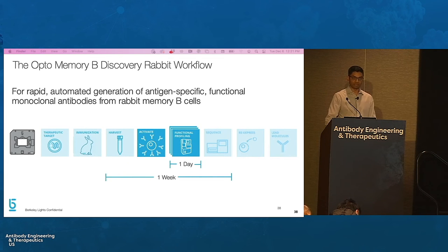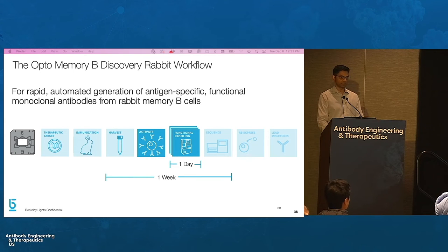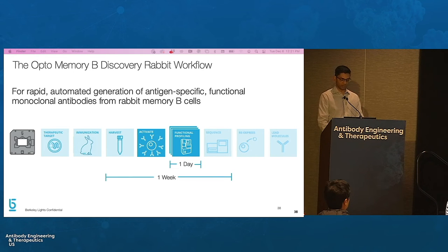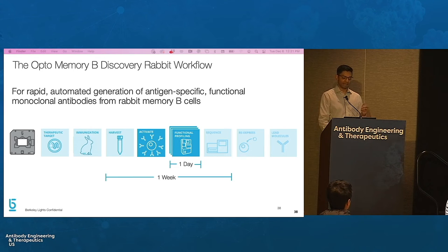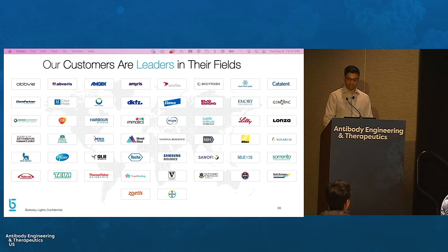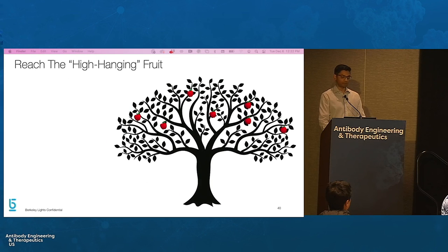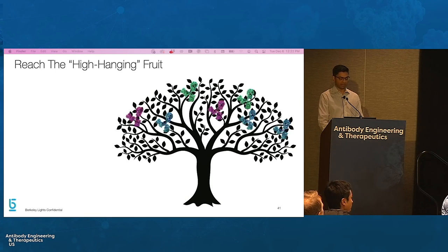In summary, BLI's new Opto-Memory B discovery rabbit workflow enables rapid discovery of functionally characterized antibodies from rabbit memory B-cells. The workflow enables robust activation of rabbit memory B-cells using feeder-free activation media, function-forward screening of activated B-cells to identify antibodies of interest, and efficient recovery of antibody sequences for downstream sequencing and re-expression — all in one week. Berkeley Lights has a large and growing list of customers using the technology for antibody discovery, cell line development, and other applications, and by enabling functional screening of broad B-cell diversity, Opto-B discovery will enable discovery of antibodies against difficult targets.